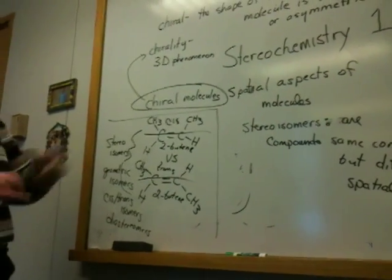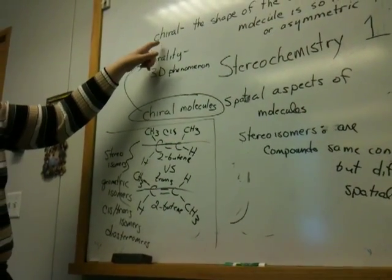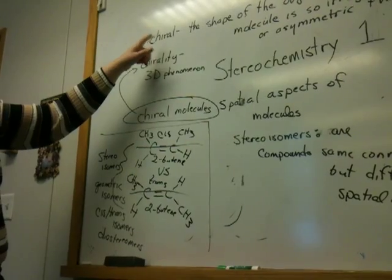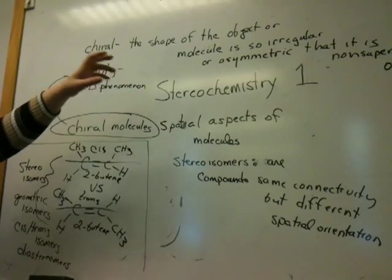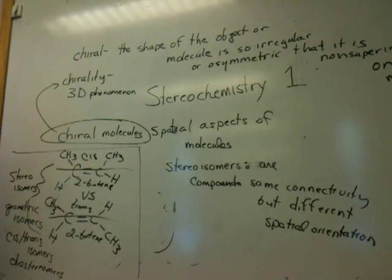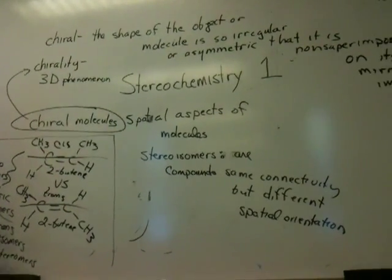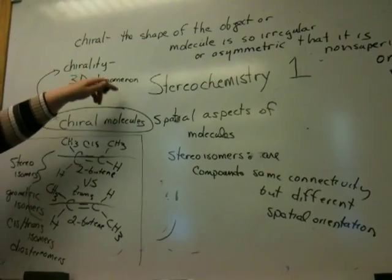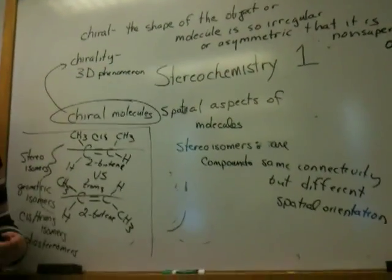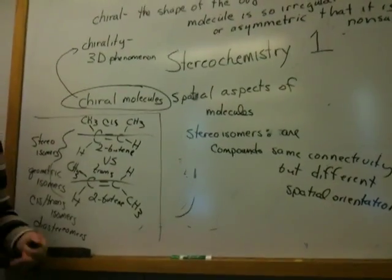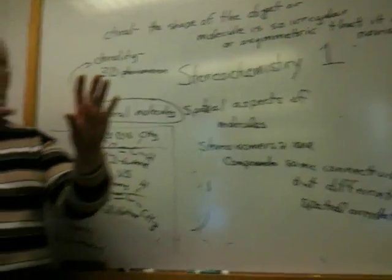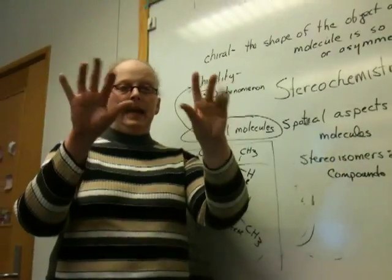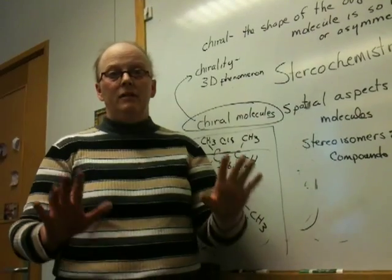So what we're going to be dealing with now is chirality. Again, if something is chiral, the shape of the object or molecule is so irregular or asymmetric that it is non-superimposable on its mirror image. And this, again, is a three-dimensional phenomenon. So we say molecules are chiral, or they possess chirality. To give you an example of an object that's chiral: hands, feet. Hands are chiral.